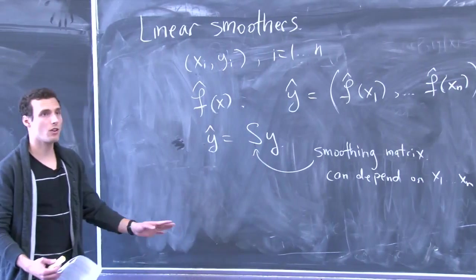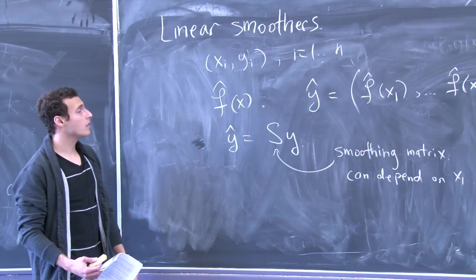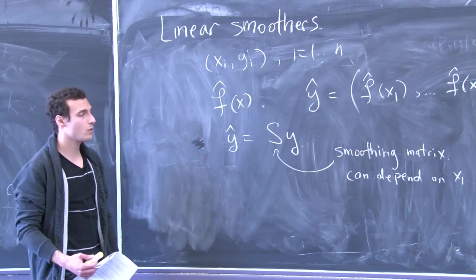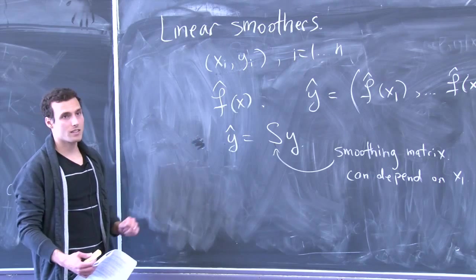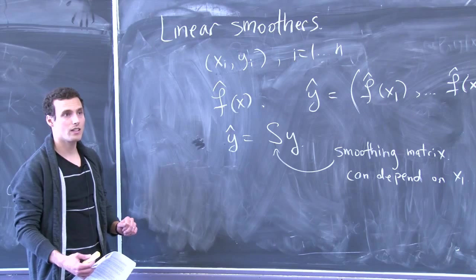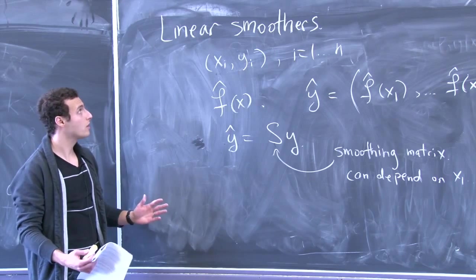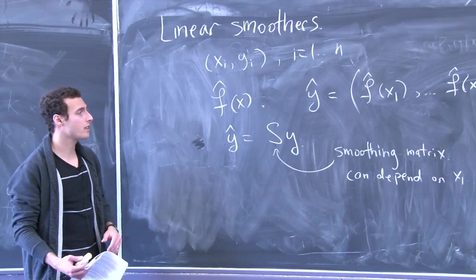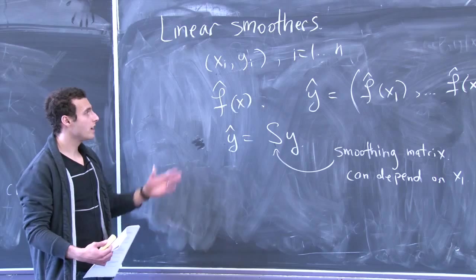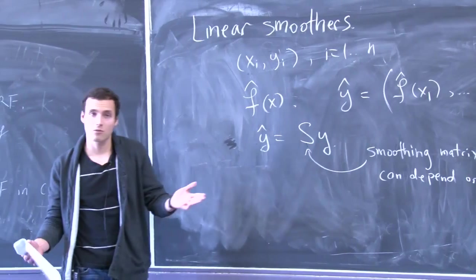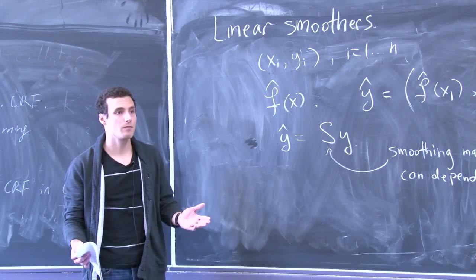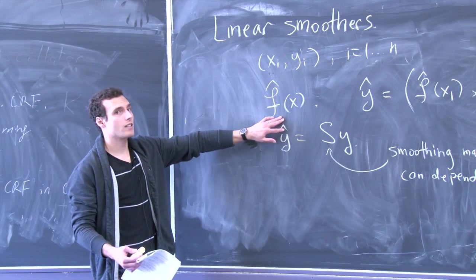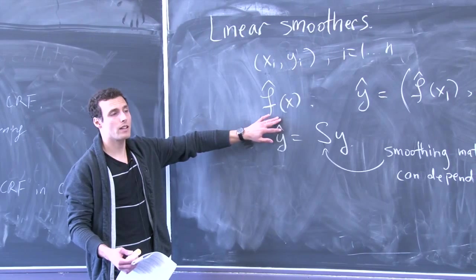Everything we've learned so far falls into this class — these are all linear smoothers because the fitted values are linear functions of y. They don't produce linear f-hats as a function of x — that's a common source of confusion. F-hat of x for a cubic spline is a piecewise cubic function of x. It's not linear. It's not a linear function of x.